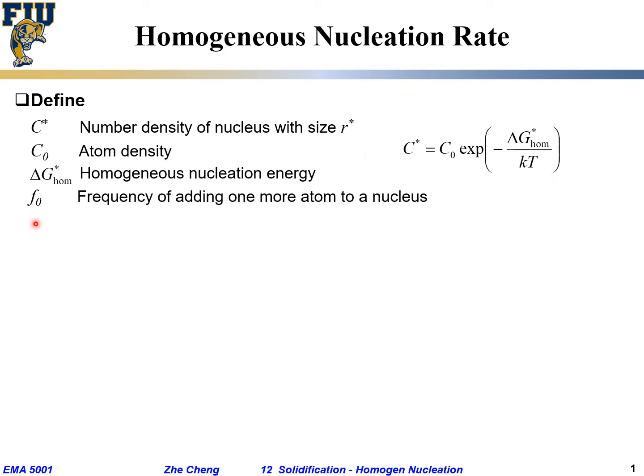One additional term we define is f0, the frequency of adding one more atom to a nucleus — that is, how many new atoms per second are added to an existing critical nucleus.